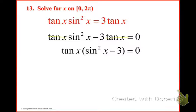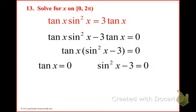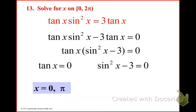So did we split up the two functions? Are they split up? Yes. So now we can separate them and solve. We're going to have tangent x equals 0, and sine squared x minus 3 equals 0. So tangent equals 0 at 0 and π. What about sine squared x minus 3 equal to 0?